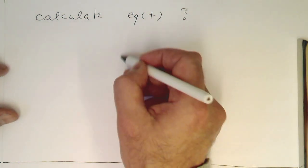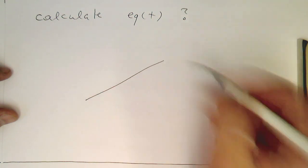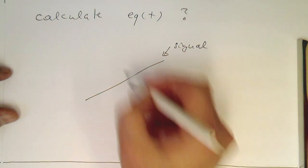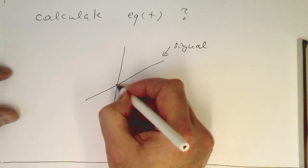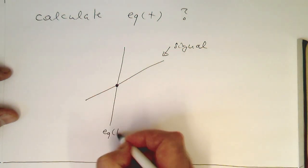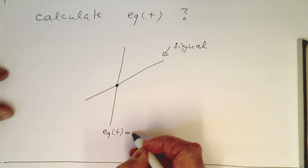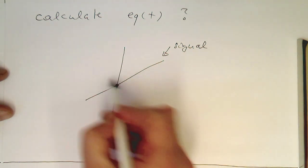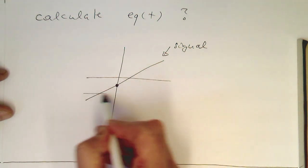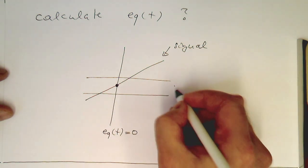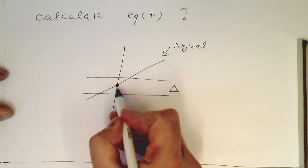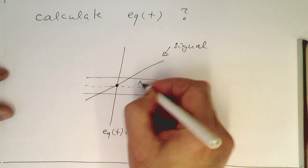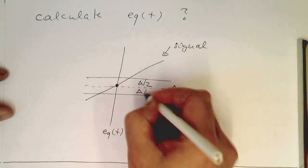So how do we do this? The idea is that we start with this linear development here. At this point, e_q of t is zero. At this point the quantization error is zero. This means we are right in the middle of our quantization step. That's exactly in the middle. The height of this here is Delta half, and the height here is also Delta half.